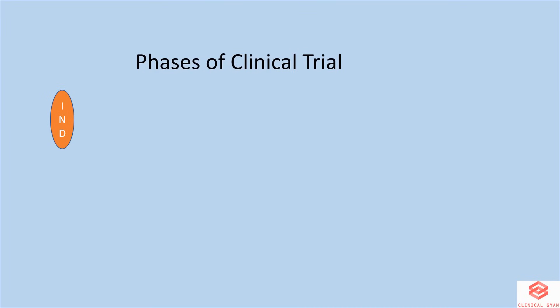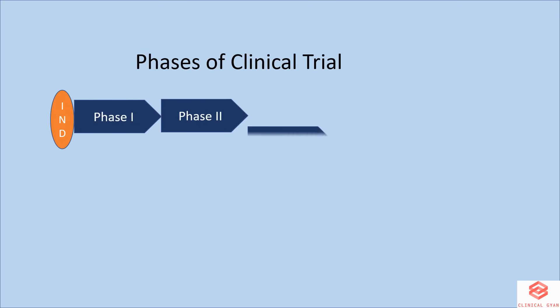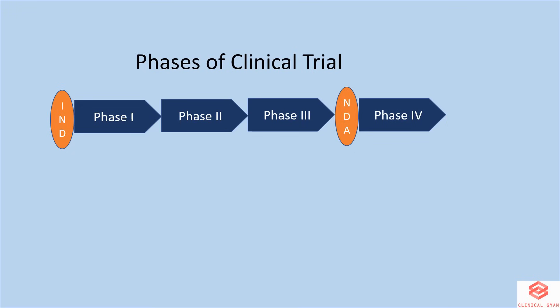Drug developers or sponsors must submit an IND, or Investigational New Drug application, to health authorities such as the FDA or EMA before beginning clinical research. Trials can start once approval is granted. It proceeds through Phase 1, 2, and 3. During a promising Phase 3, drugs can be marketed through an NDA, or New Drug Application. Then it goes to Phase 4.